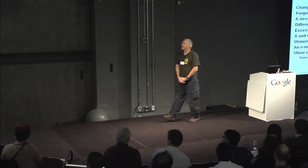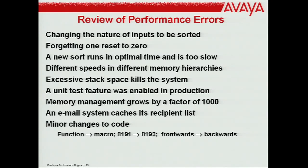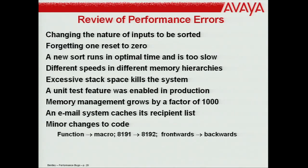Here are all the performance bugs I've mentioned: changing the nature of inputs (the organ pipe thing); forgetting one simple reset-to-zero; building something mathematically optimal but the user says it's too slow; different speeds in different parts of the memory hierarchy; stack space issues; a unit test that should have been disabled but was enabled; a memory management system used at a scale a thousand times beyond its designer's intent; caching a recipient list making email quadratic; minor code changes with disastrous effects.